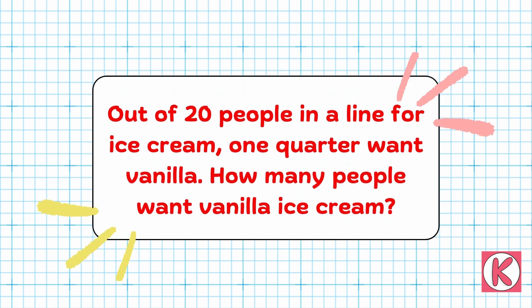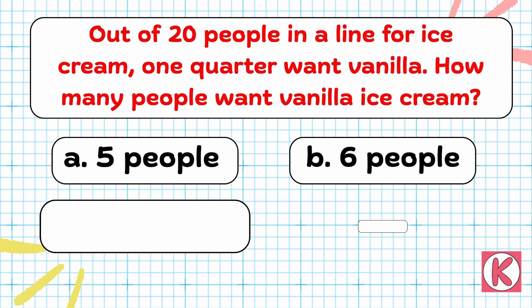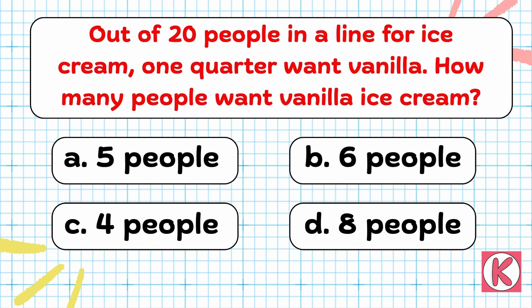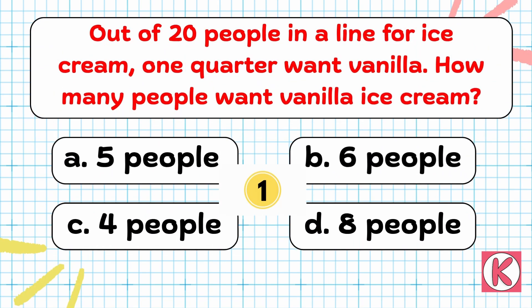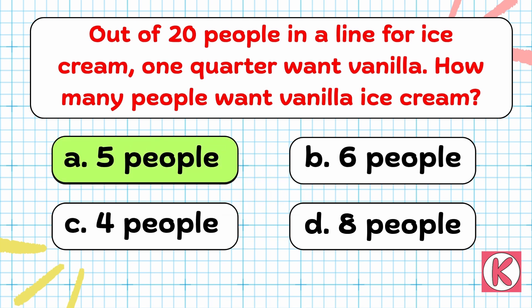Next question. Out of 20 people in a line for ice cream, 1 quarter want vanilla. How many people want vanilla ice cream? Correct answer: Option A — 5 people.